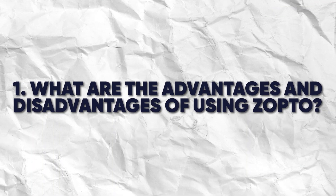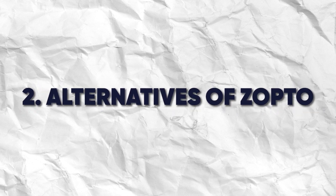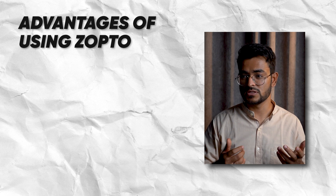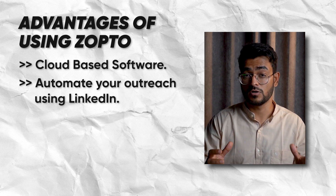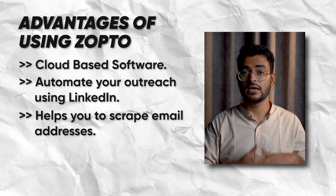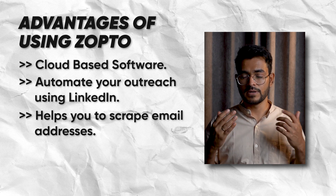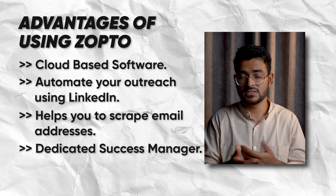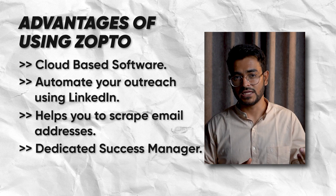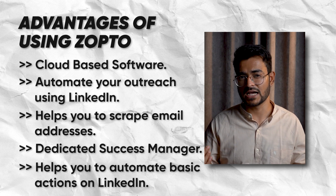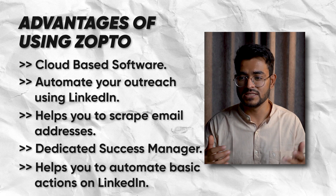Let's get into the advantages and disadvantages of using Zopto, and let's look at the alternatives we can use to get more sales on LinkedIn. Zopto is cloud-based — it helps you automatically reach out to people on LinkedIn without downloading software onto your computer, without slowing it down, and without keeping your computer on. It can help you scrape email addresses, and depending on your pricing plan, you get a dedicated customer success manager. It can automate basic actions like sending connection requests so you don't waste time on tedious tasks.